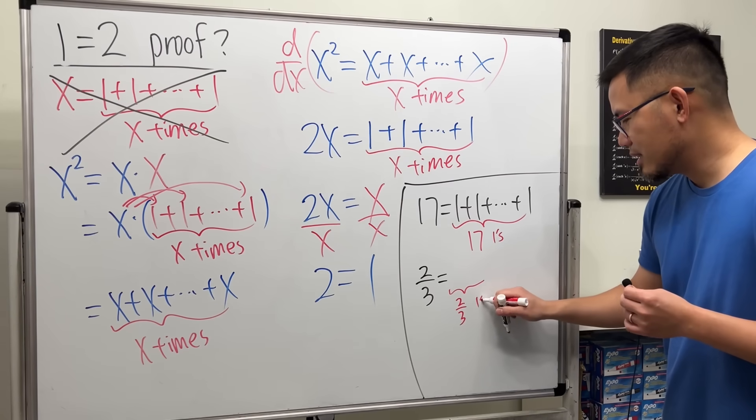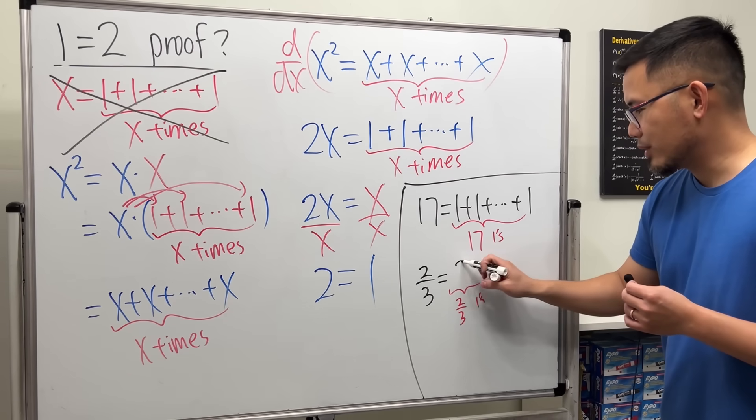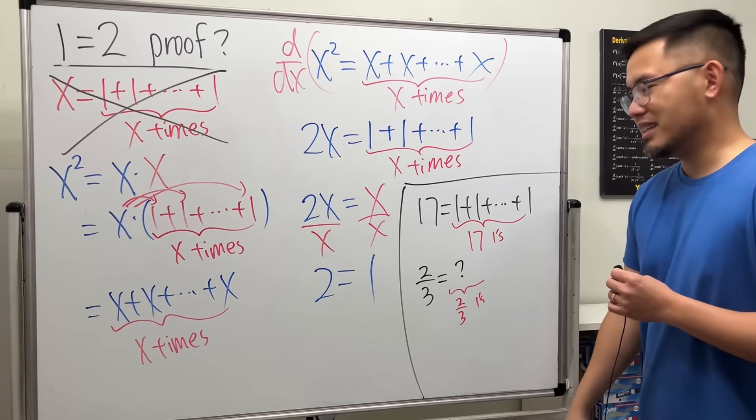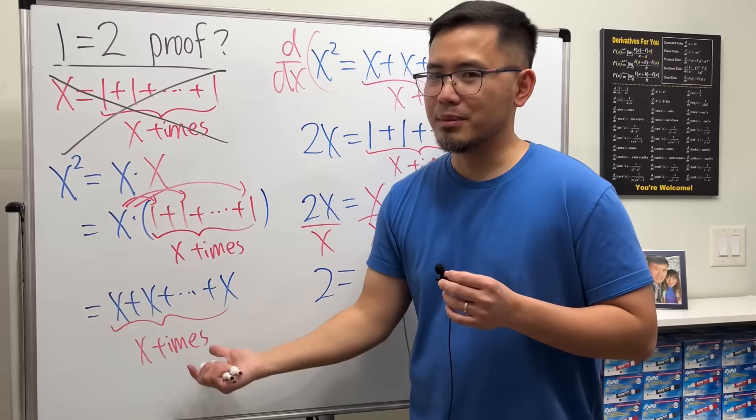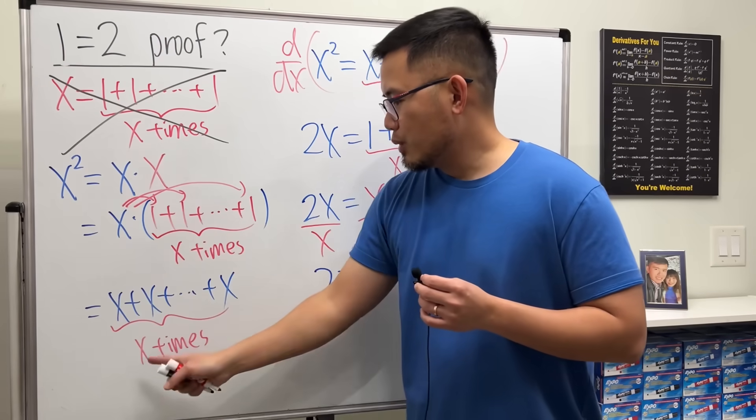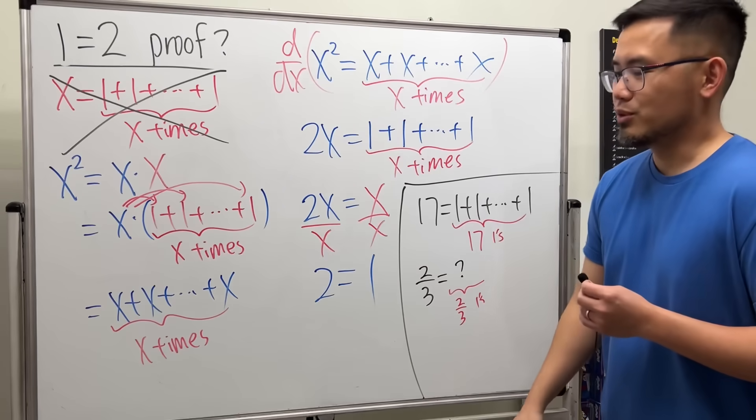If you have 2/3, how can I write 2/3 of ones? 2/3 many ones? I'm stuck. Like, how do I do that? I can't, right? I can't. So that does not make sense. Of course, the rest doesn't make sense. X squared equals this? Yeah, just wrong.